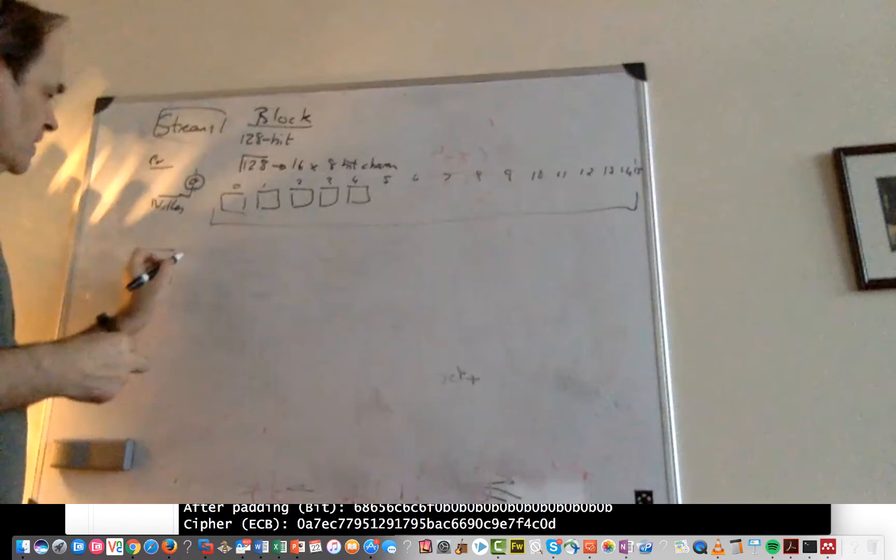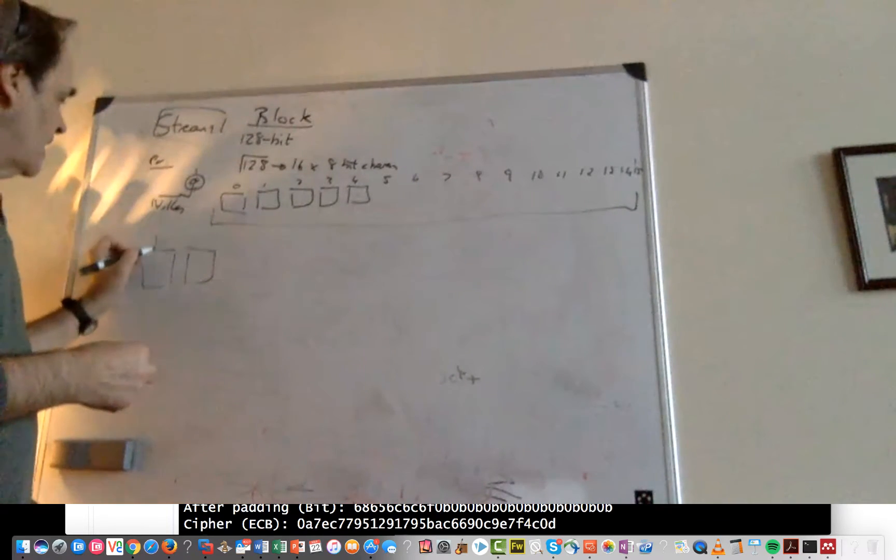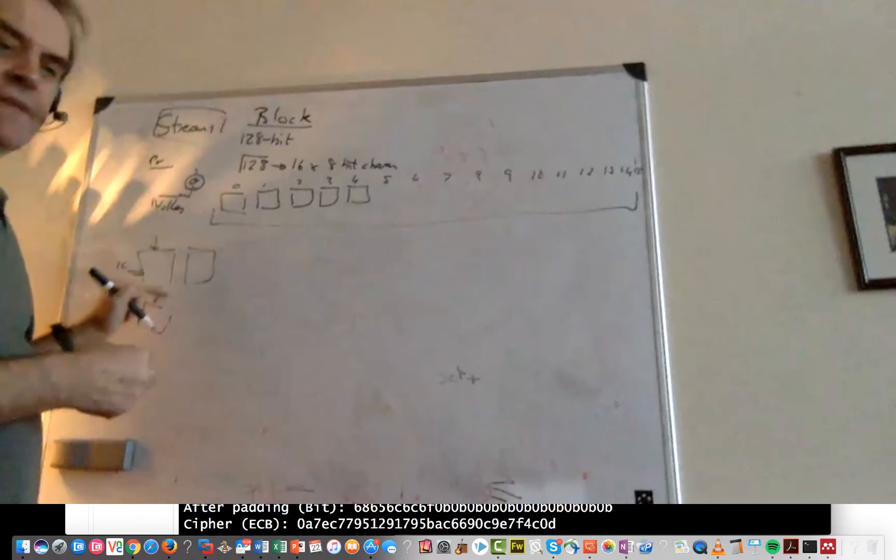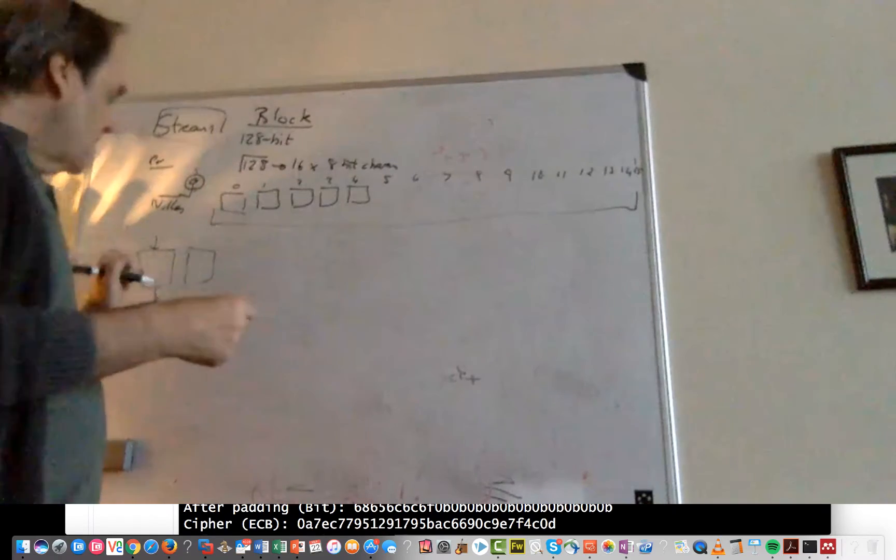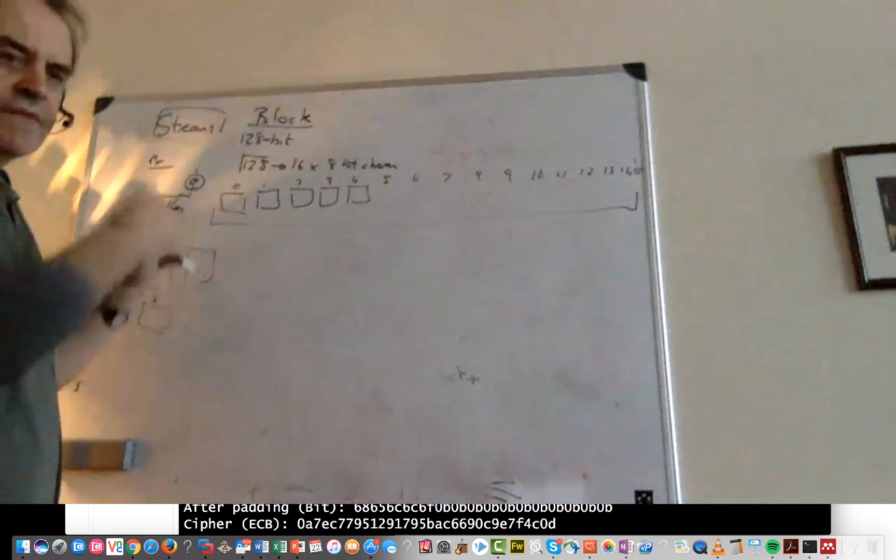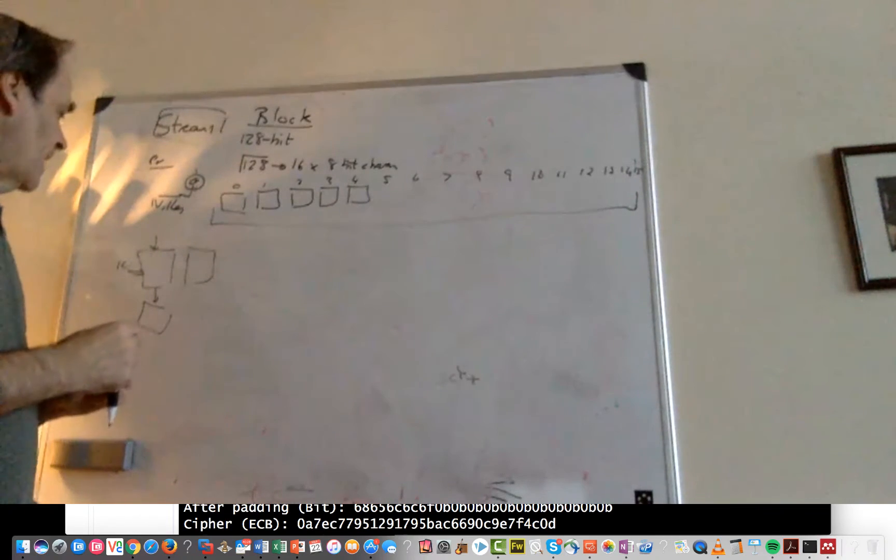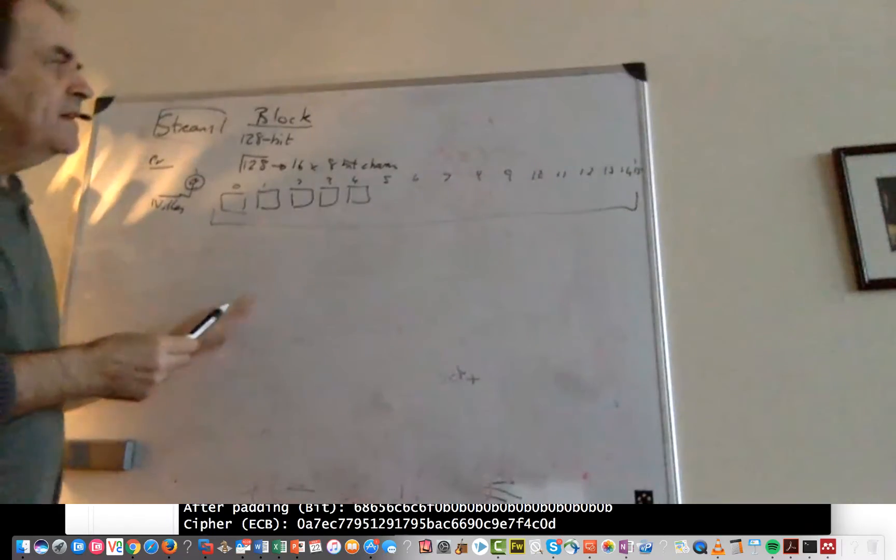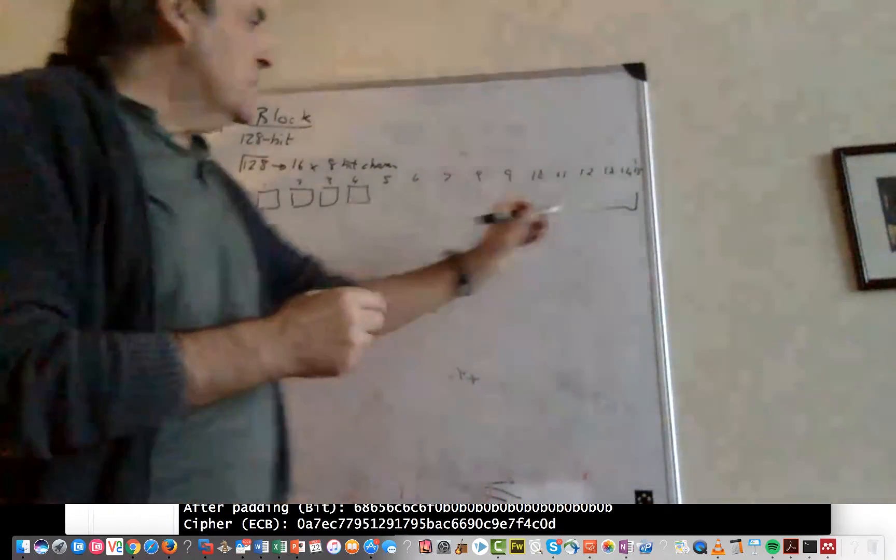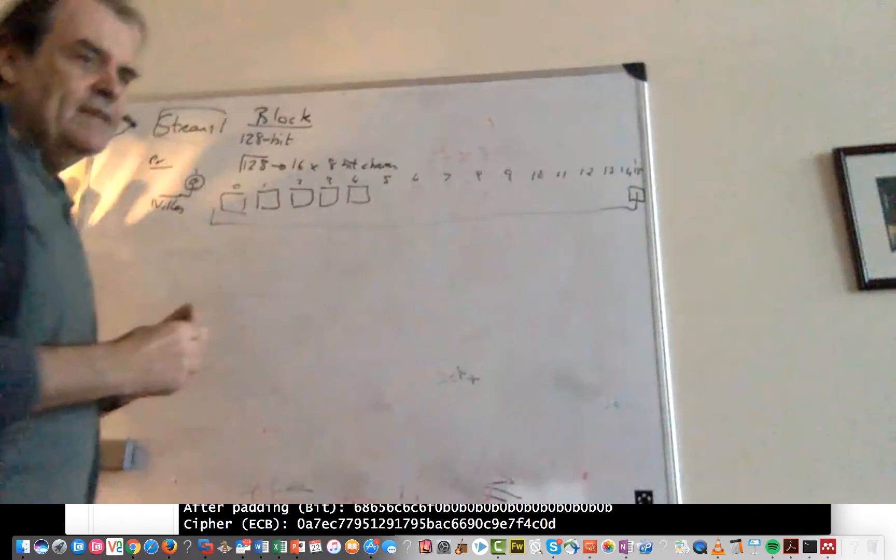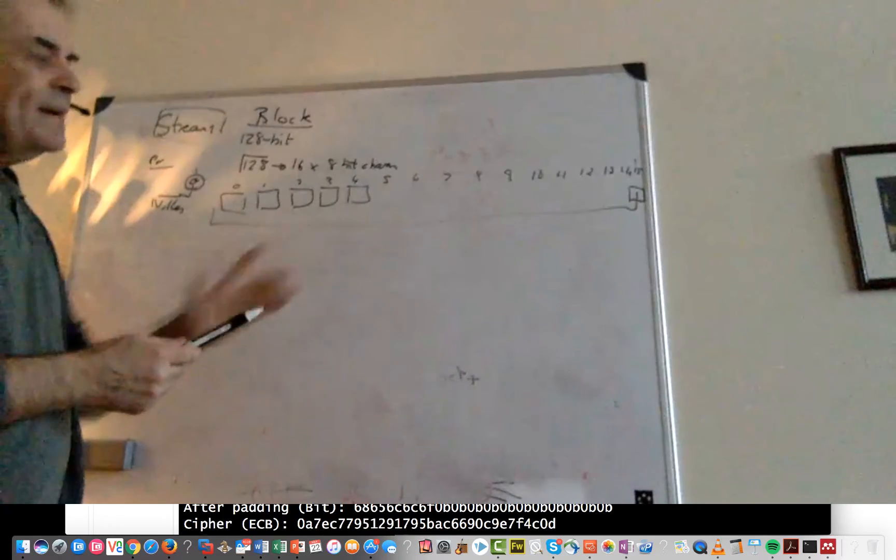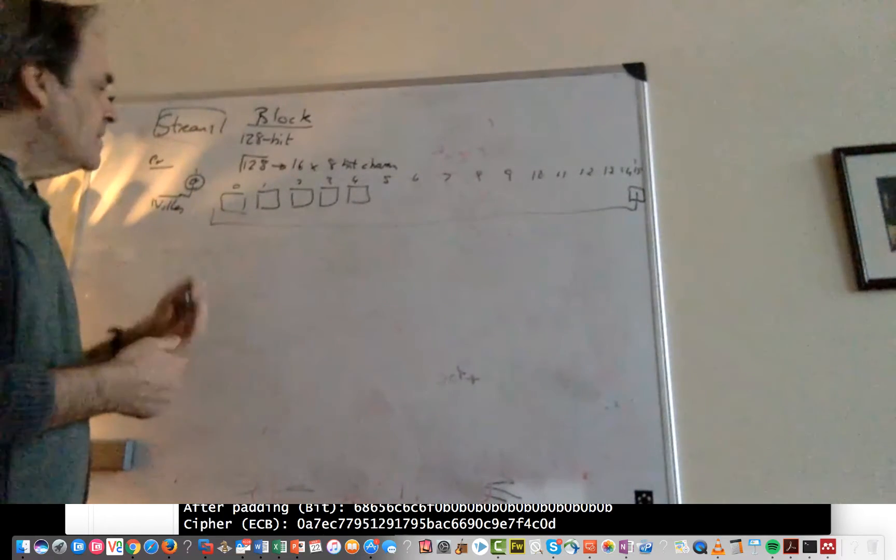So what we'll do is that we'll take each block one at a time. If we use electronic codebook we apply the key and then our cipher block comes out of each block. But if we use cipher block chaining then we'll take the output from one block and feed it into the next block and so on. We have our block, so in this case we have 16 different characters or bytes. We typically look at a byte array when we're dealing with ciphers.